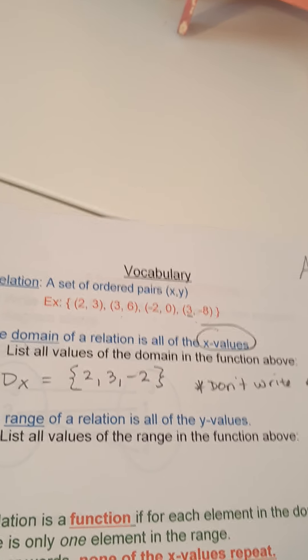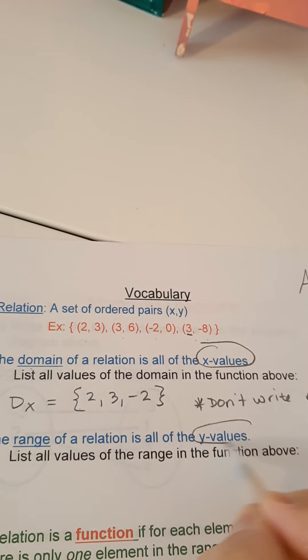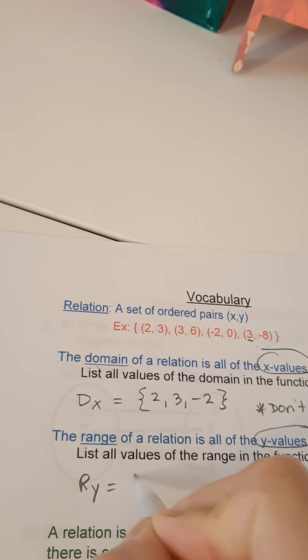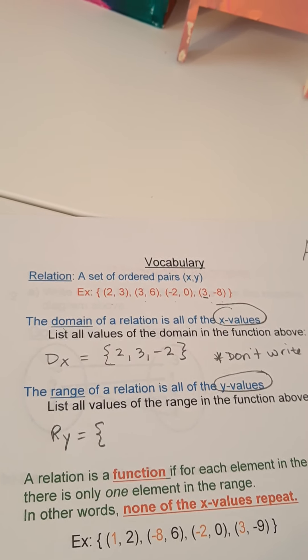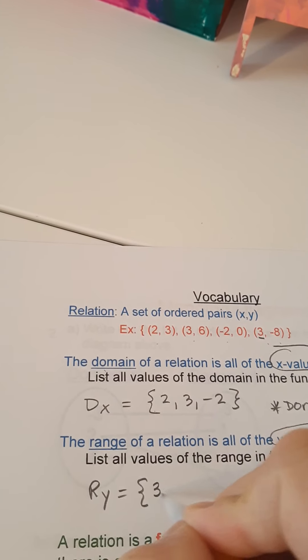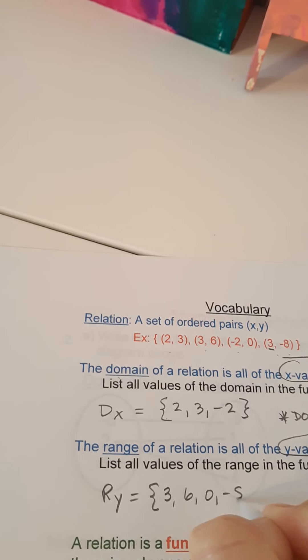The range, which you already know, is the possible y values. The abbreviation for that is r subscript y. So the y values from here are 3, 6, 0, and negative 8.